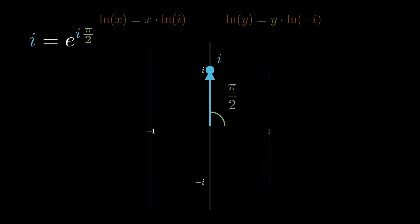Using Euler's formula, i can be written as E to the power i times pi over 2. Taking the natural log, we find that the natural log of i is i times pi over 2.